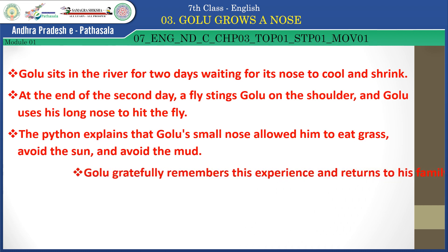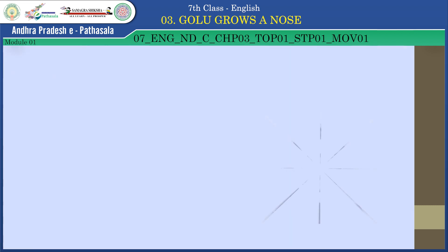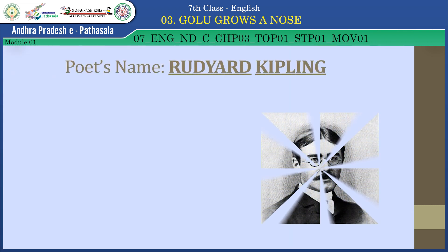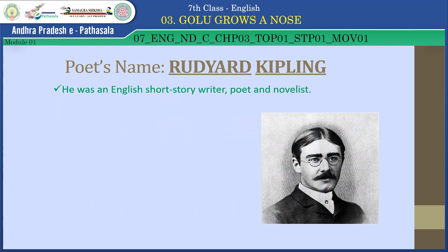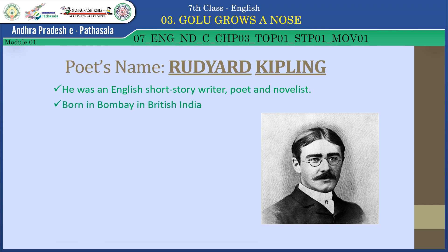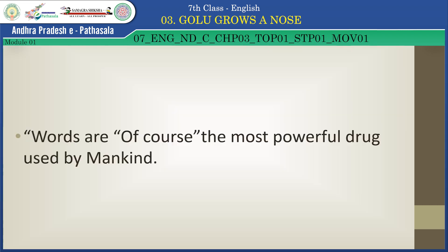Rudyard Kipling was an English short story writer, poet, and novelist, born in Bombay in British India. Popular books by Kipling include Kim, Jungle Book, Just So Stories, and Rikki-Tikki-Tavi. His famous quote: 'Words are, of course, the most powerful drug used by mankind.'